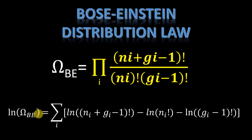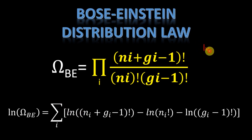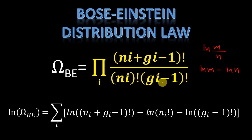So the log of this expression — inside we have multiplication, so when we take the logarithm it becomes addition, and this changes to a summation. Now, as we know that log of m divided by n is log m minus log n, so this whole thing becomes log of this minus log of this. So this is what we get after taking the logarithm.